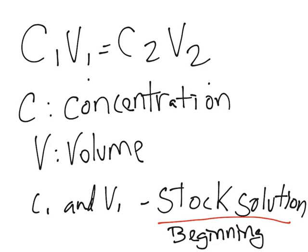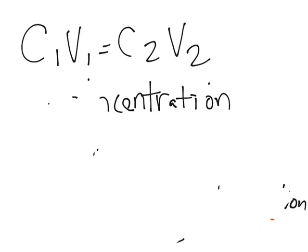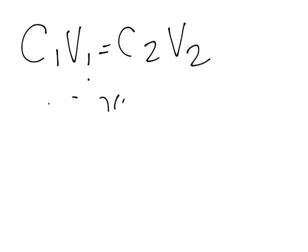So now let's use this in practice. Let me erase this to just leave the formula there. The problem says, contact lens rinsing solution has a sodium chloride concentration of 0.15 molar. If you wish to make 800 milliliters of this solution from a 6 molar stock solution, what volume of the stock solution is needed.